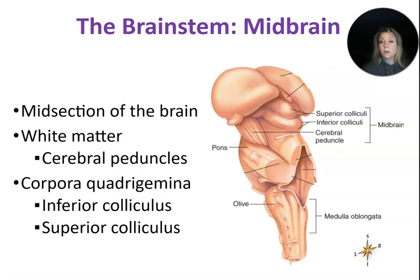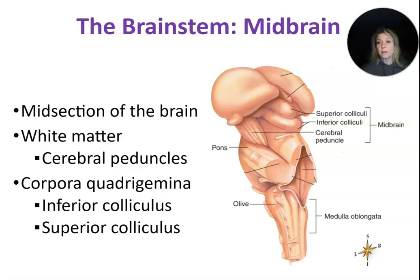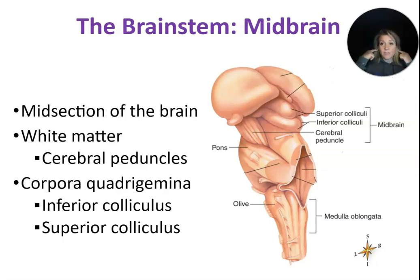We also have the corpora quadrigemina, which translated means the bodies of four twins, because it's really four bumps — two on top and two on the bottom. They are called the colliculi. The inferior colliculi are the two bumps on the bottom and play a role in hearing reflexes, while the superior colliculi are responsible for vision reflexes. A good memory trick: the eyes are a little bit higher than the ears, so the superior colliculi sit on top of the inferior colliculi.